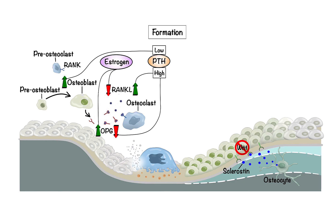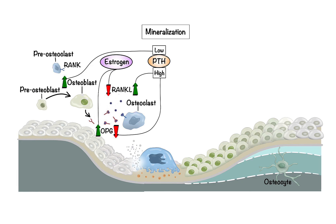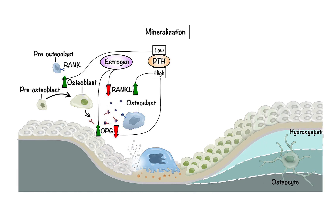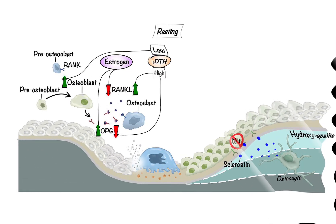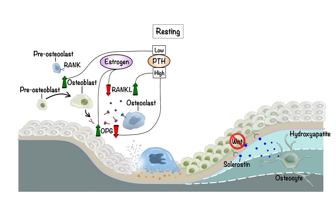After the formation phase, the mineralization stage occurs. In this step, the soft protein matrix, or osteoid created by osteoblasts, starts to harden as calcium and phosphate ions combine with the osteoid, forming a strong mineral structure called hydroxyapatite. Once mineralization is done, the bone remodeling process moves to the resting phase, where bone remains in a stable state without any active remodeling, and bone lining cells cover the bone surface to help maintain its integrity. This resting phase persists until the next remodeling cycle is initiated, maintaining a continuous process of bone renewal and repair.